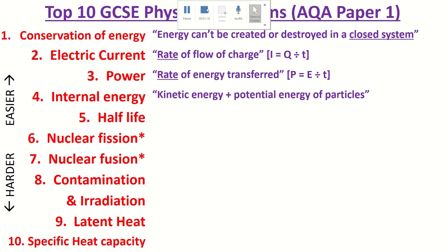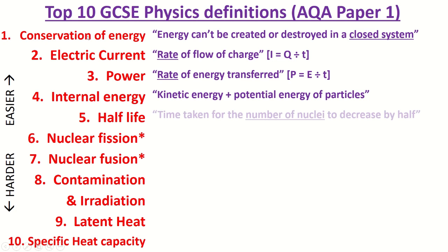Internal energy means the particles of a substance have both kinetic and potential energy. To find the internal energy you have to do the sum of the kinetic and potential energy of those particles. Kinetic energy is movement; potential energy is how far apart they are.